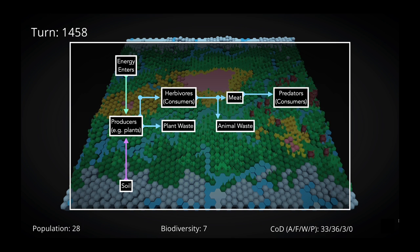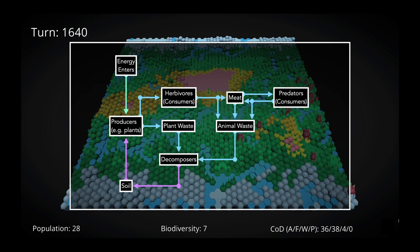Meat is consumed by predators, who also produce animal waste and meat, and meat produces its own kind of waste as well. All this waste is consumed by decomposers, which return nutrients to the soil. Finally, organisms are all moving around and doing stuff, which causes energy to leave the system.